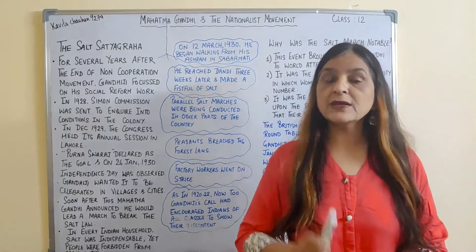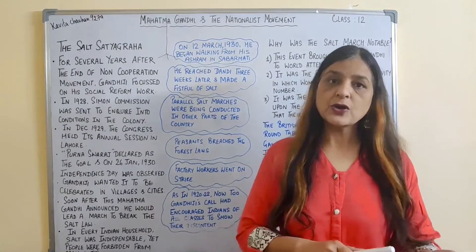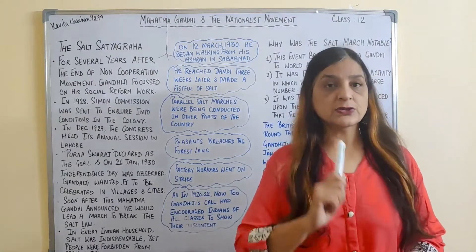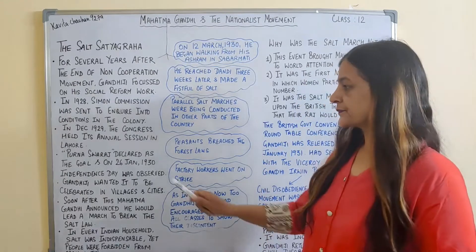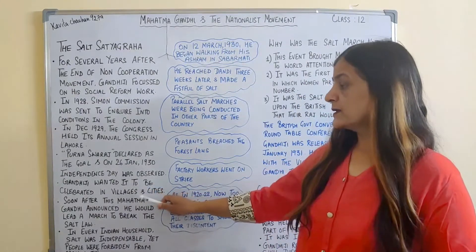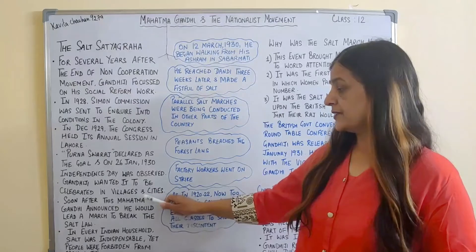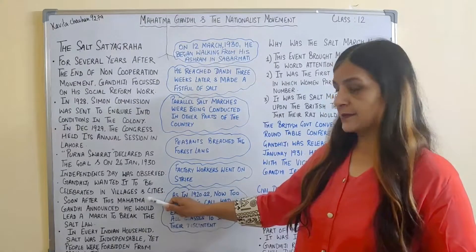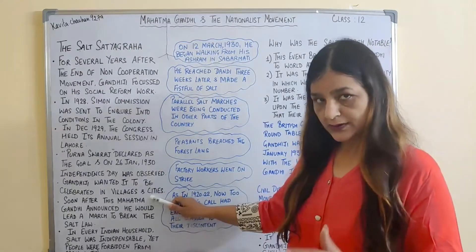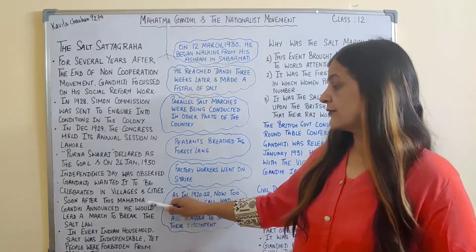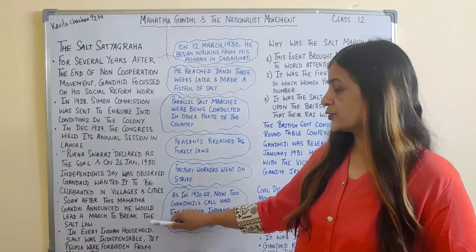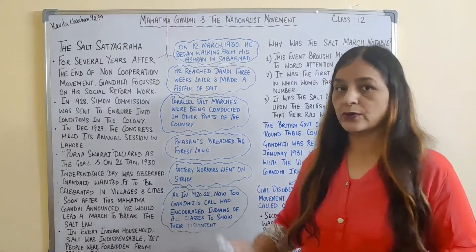To mark the significance of this day, later on 26th January, the Constitution was implemented. Gandhiji wanted this day to be celebrated in villages and cities. Soon after, Mahatma Gandhi announced he would lead a march to break the Salt Law.